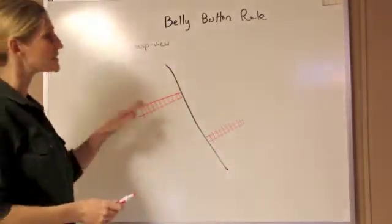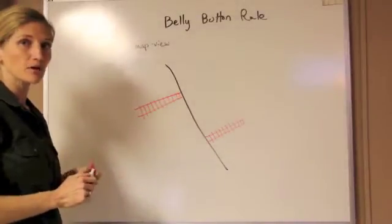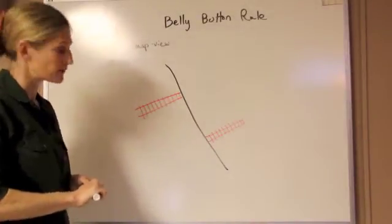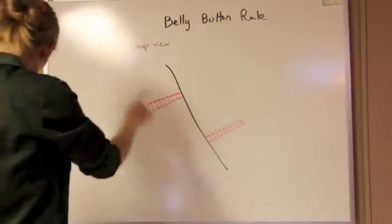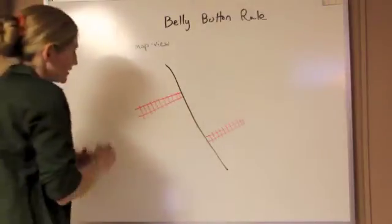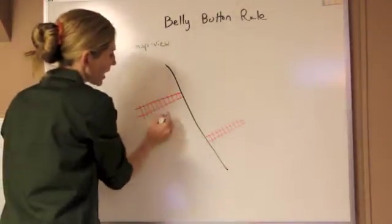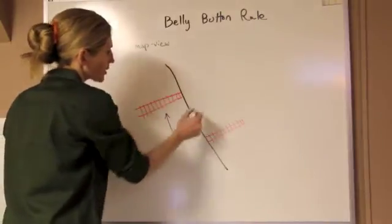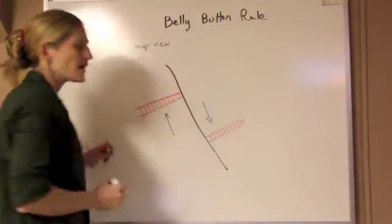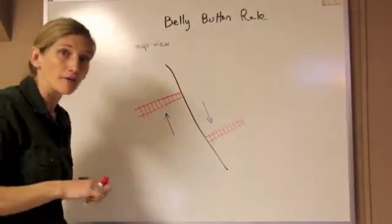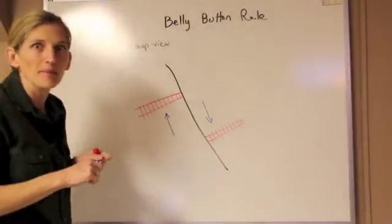And the question is, is this a right lateral strike-slip fault or a left lateral strike-slip fault? Now what we can see, trying to understand the motion, is that in this case this side has gone in that direction, and that side has gone in that direction, but is it right lateral or left lateral? It might be hard to tell.